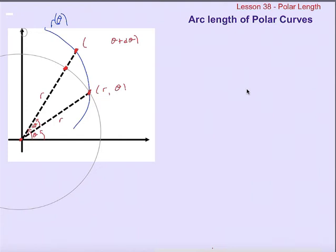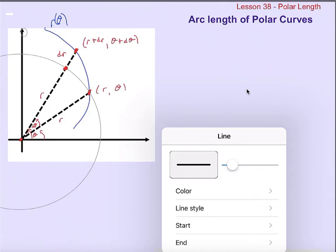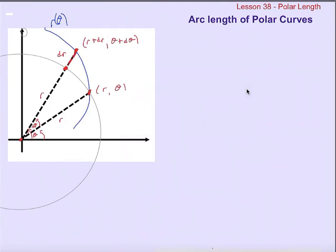So we'll call this extra little bit of radius dr—the slight change in radius between when the angle is θ and when the angle is θ plus dθ. So this radius is r plus dr.